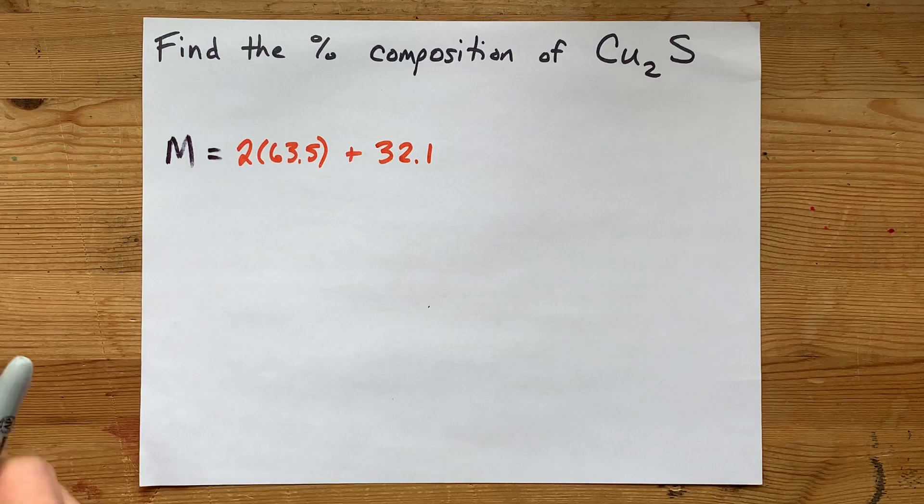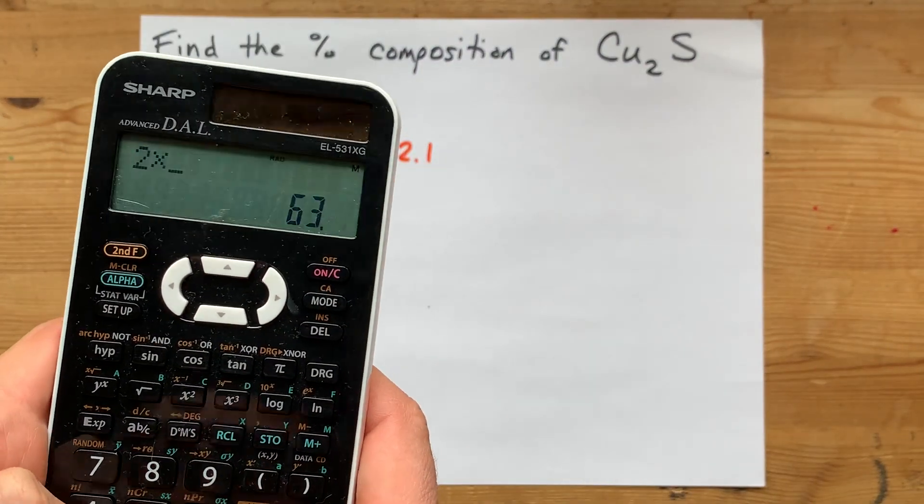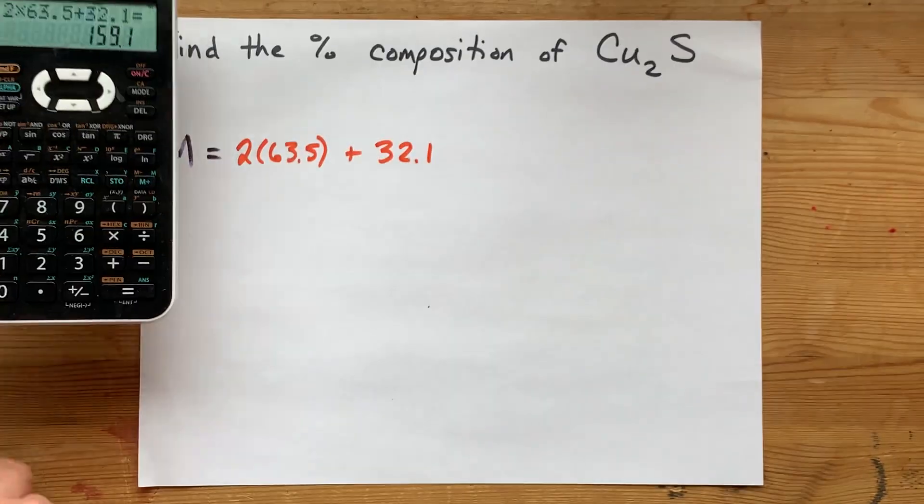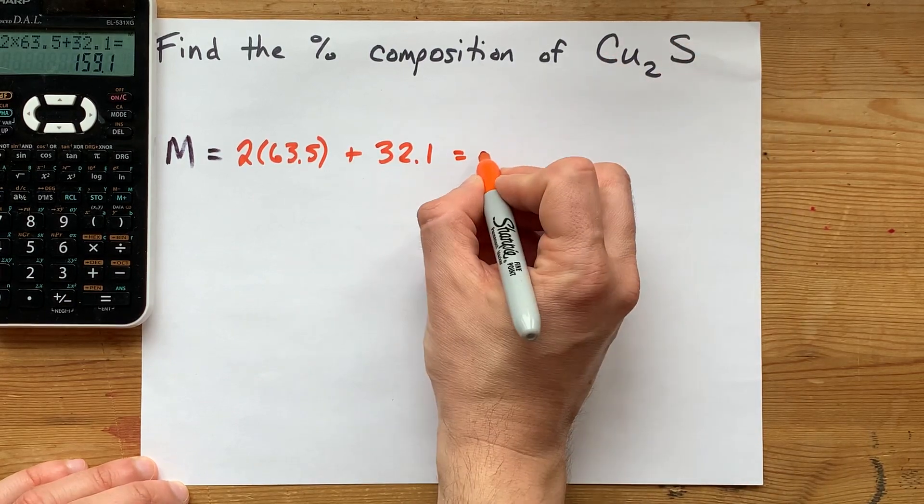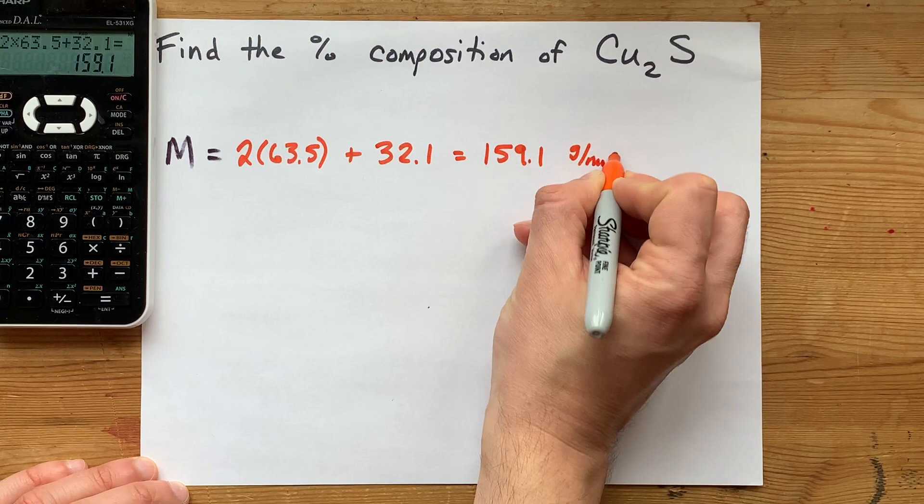Use as many decimal places as your periodic table has. Two times 63.5 plus 32.1. My total molar mass of copper sulfide here is 159.1 grams per mole.